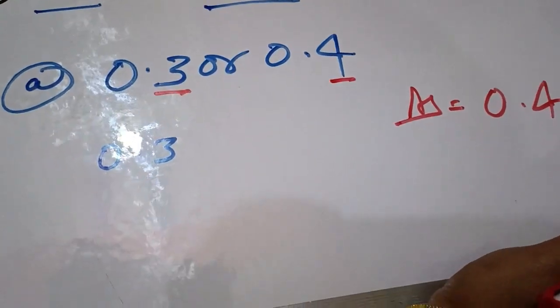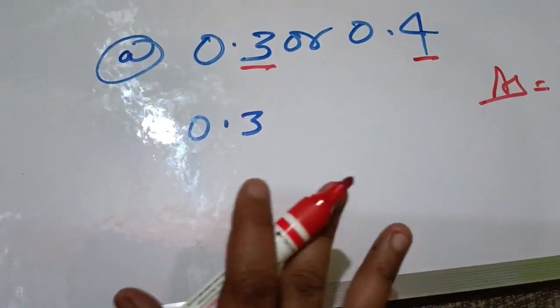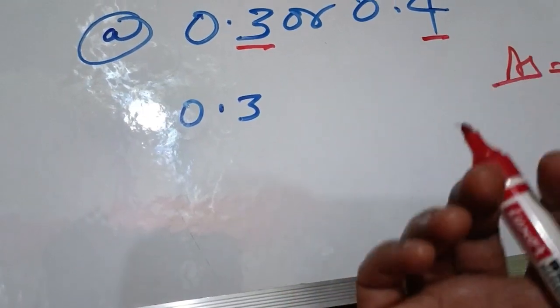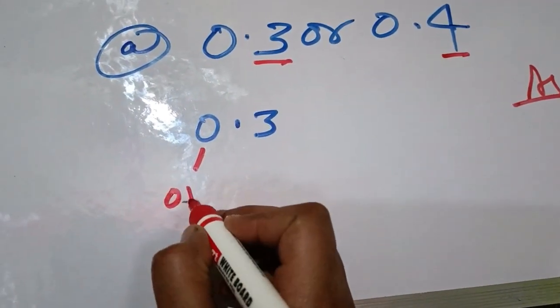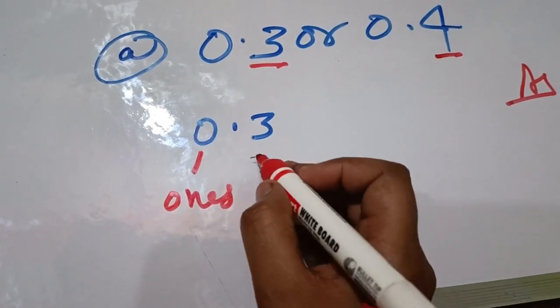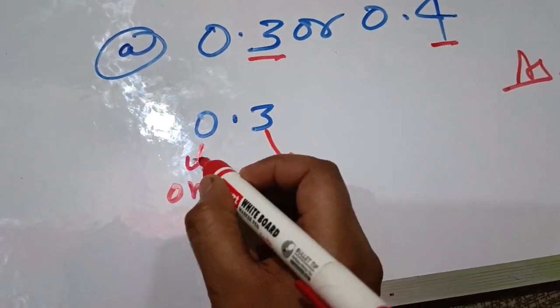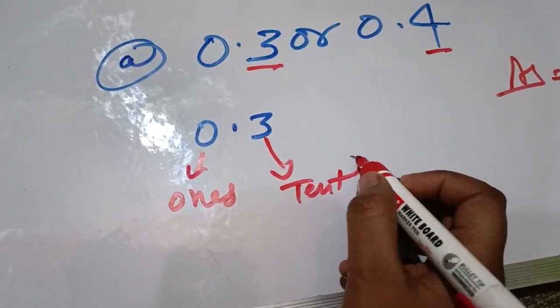Now we can write this. If you want to explain this, how will you see? This is our ones place and this is our tenths place. Clear.